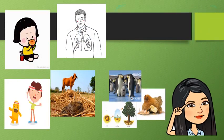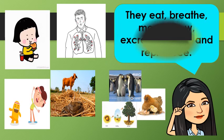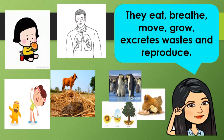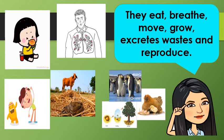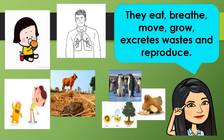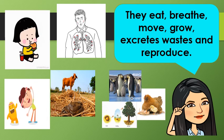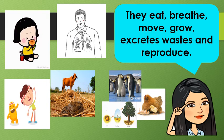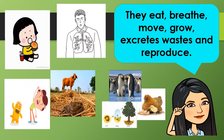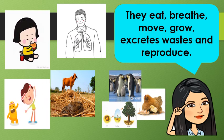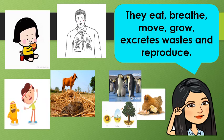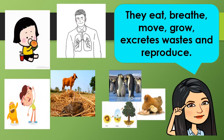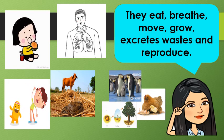Living things eat, breathe, move, grow, excrete waste, and reproduce. Just like us humans, we need to eat our food. That's why we have the go, grow, and glow foods.